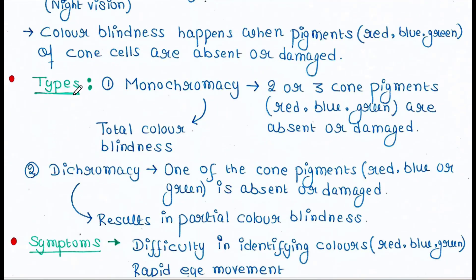There are two types of colorblindness: monochromacy and dichromacy. In monochromacy, two or three cone pigments are absent or damaged — for example, red and blue, red and green, blue and green, or all three. This causes total colorblindness. In dichromacy, only one cone pigment — red, blue, or green — is absent or damaged, resulting in partial colorblindness.